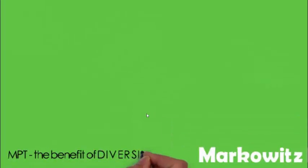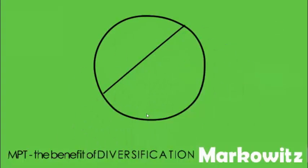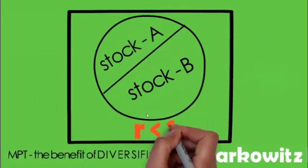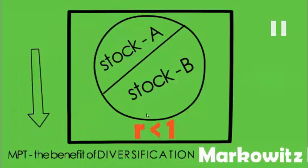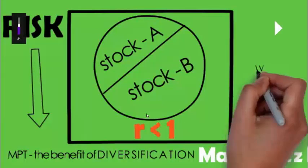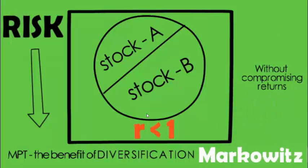Before that, let's discuss the Markowitz theory, that is the modern portfolio theory, and the benefit of diversification. This theory is about combining two stocks — stock A and stock B — with negative correlation, so that the risk gets diversified. When correlation is less than one, when one stock rises the other falls, and vice versa. In this way the risk of the portfolio gets diversified and reduced without compromising the returns.